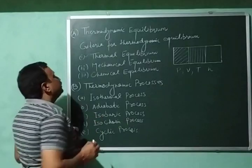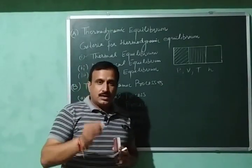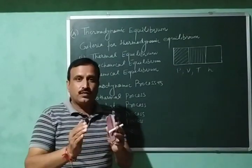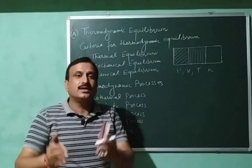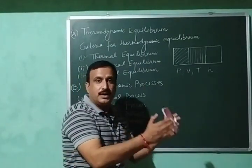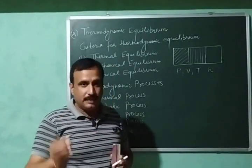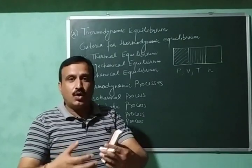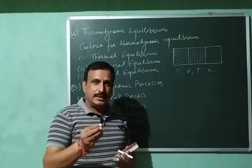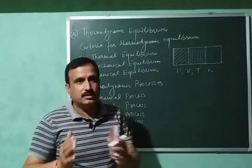The second type of equilibrium is mechanical equilibrium. A system is said to be in mechanical equilibrium if no mechanical work is done by one part of the system on the other part, and there is no movement of matter within the system or between the system and surroundings. Let us explain this.